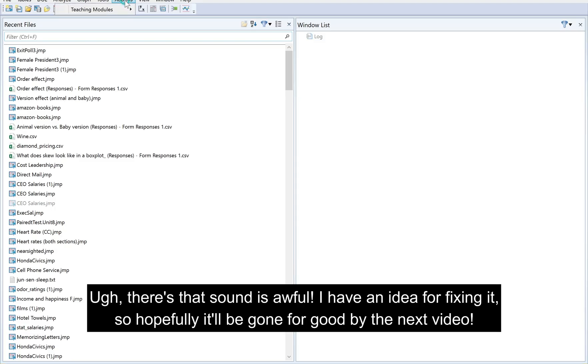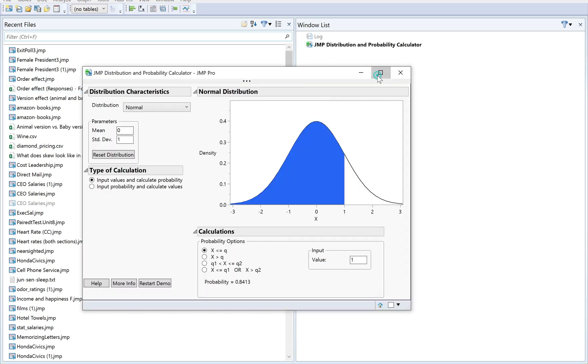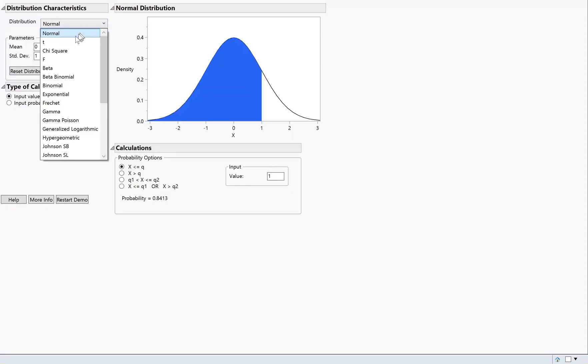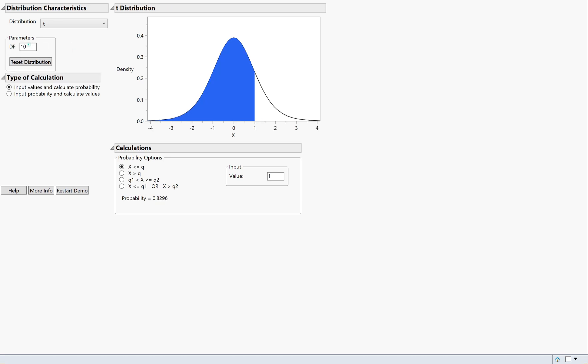If we want, we could use the distribution calculator to show where this p-value comes from. So it's quantitative data, so we're going to use the t-distribution. And we calculated that we had 39 degrees of freedom. We'll put in our test statistic, t equals 1.72, is what we got from JMP. And we want this to be a two-sided test, so we're going to pick this last probability option and change value 1 to a negative number. And we get a p-value of .09. It comes out just a little bit different from the output, just because of rounding.